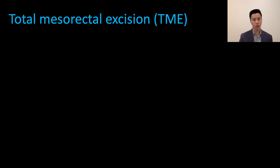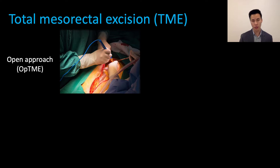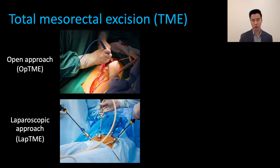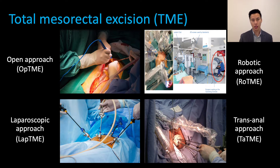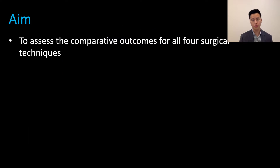There are multiple approaches in achieving total mesorectal excision: primarily the open approach or OPTME, the laparoscopic approach or LAPTME, the robotic approach or ROTME, and the trans anal approach or TAR-TME. However, the optimal approach remains controversial, and hence the aim of this study is to assess the comparative outcomes for all four surgical techniques.